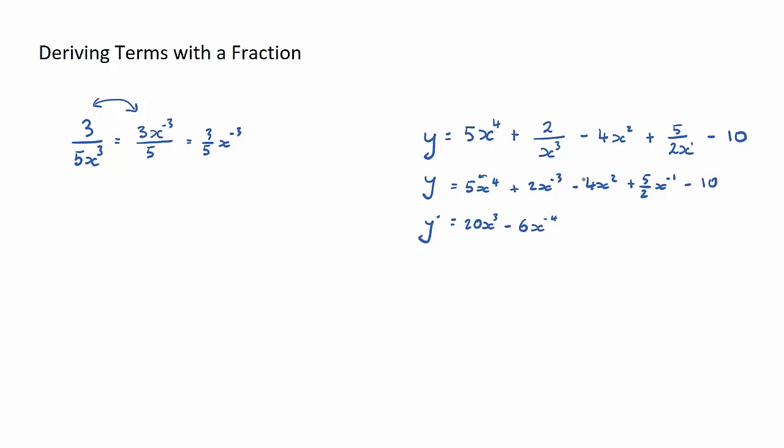The next one, 2 multiplies by the minus 4 to make minus 8, x to the power of 1 minus 1, but when we have to the power of 1, we don't write the power of 1.